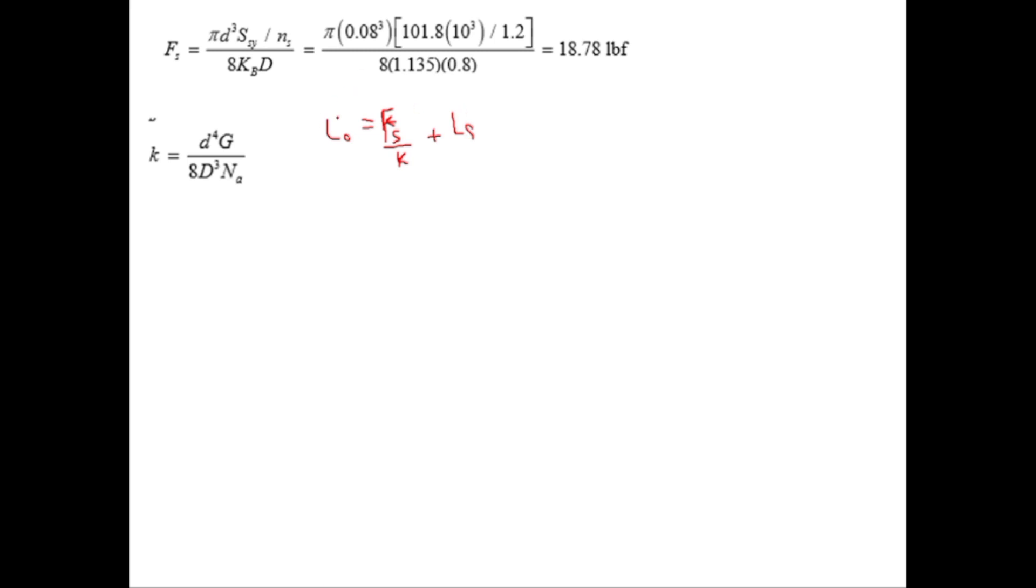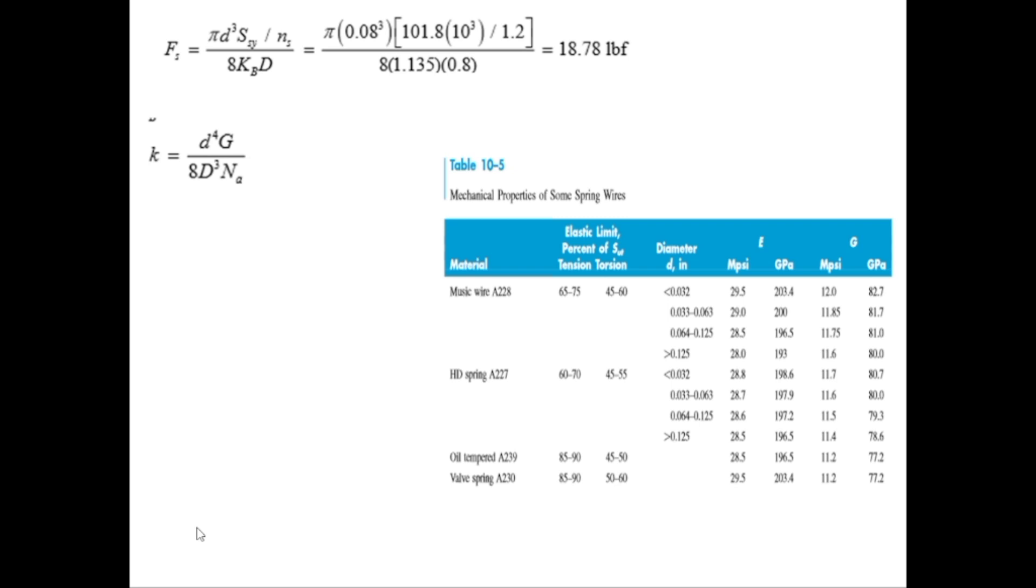For K we need to have value of G which can be found from the table. D is equal to 0.08 inches, this is 0.8, and NS is 7. For hard drawn spring our diameter is between this range which is 0.08 so the G value for it will be 11.5.